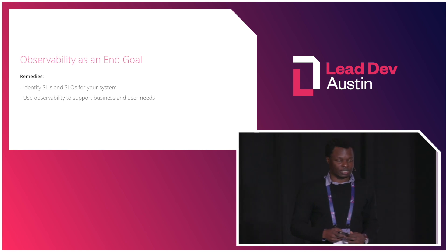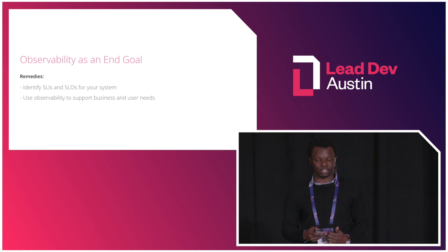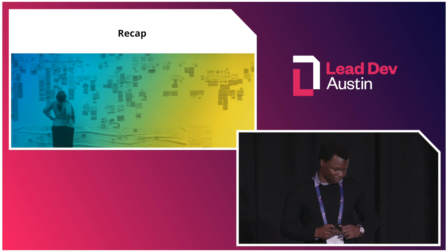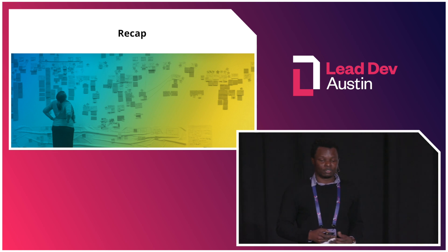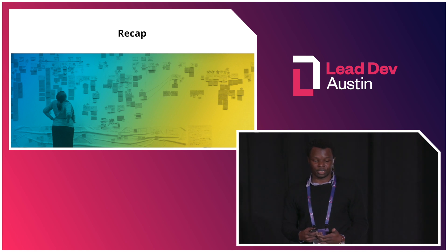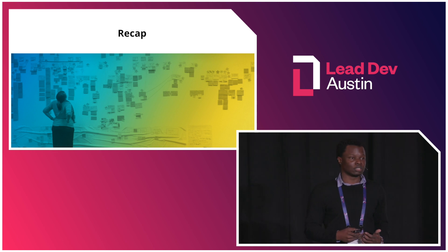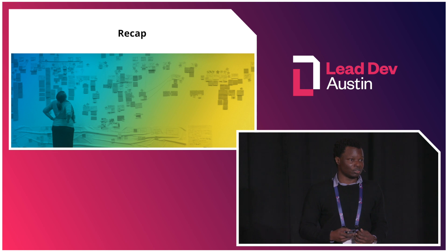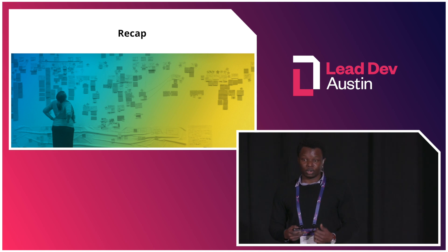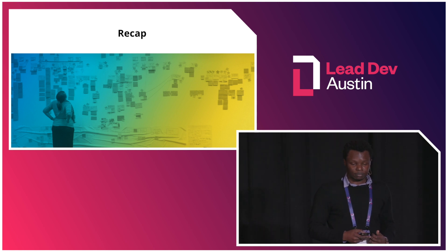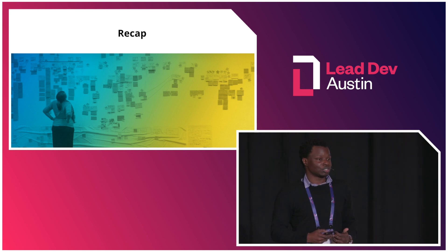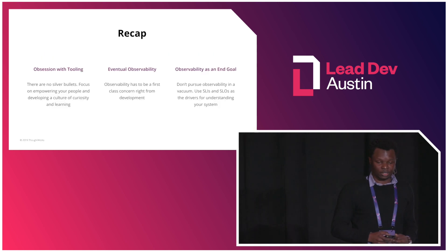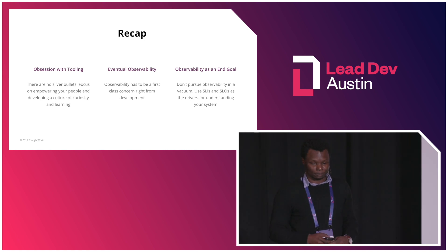So what are the remedies? Identify SLIs and SLOs for your system, and then use observability to support your business and user needs as measured by your SLOs. The systems we're building are just going to get even more complex. While we've been incredibly focused on how to build and operate these systems, we now need to apply the same level of discipline to understanding how these systems work. Observability is definitely going to help us out by giving us feedback loops into how these systems are actually behaving when you let them loose in the wild. Without this feedback loop, we will not be able to build better software. But at the end of the day, observability has to serve the goals of your business. Thank you.